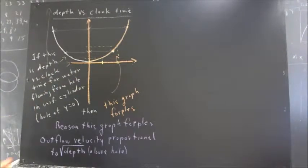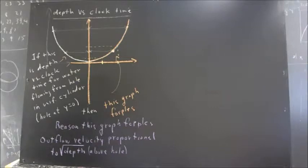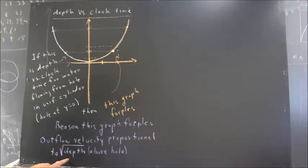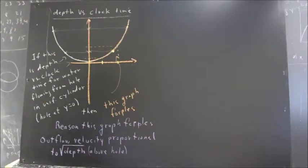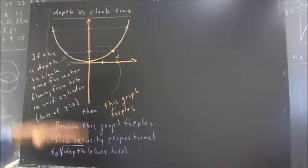Now, something else that we often do during governor's school, didn't get to do it this time, but there's a reason why this graph four-pals. And that is that the outflow velocity turns out to be proportional to the square root of the depth above the hole. Now, the outflow velocity is also proportional to the rate at which water exits.